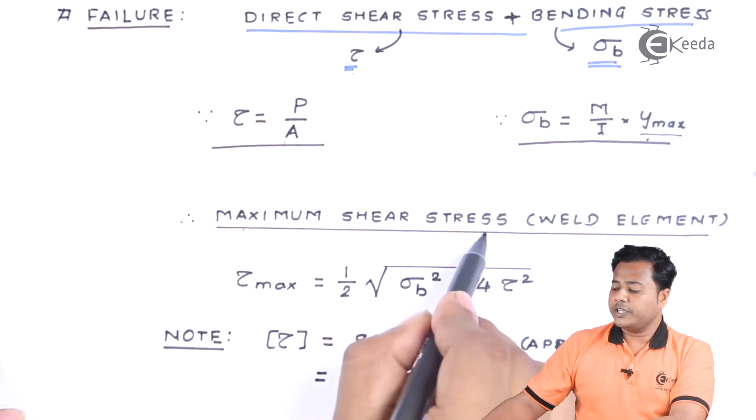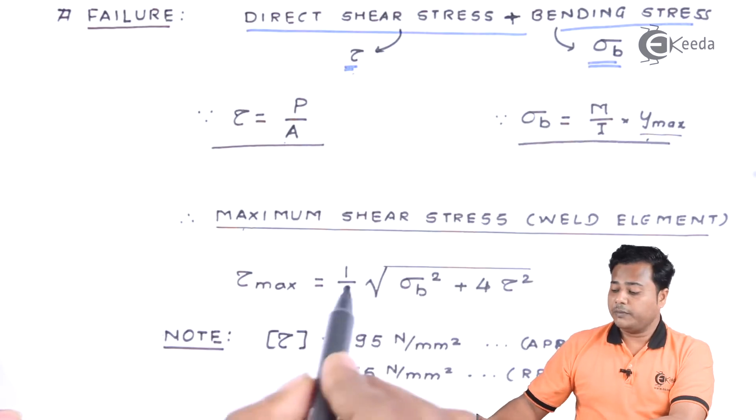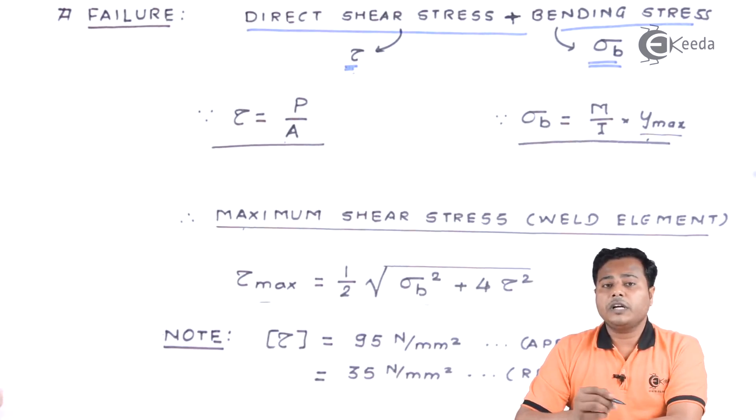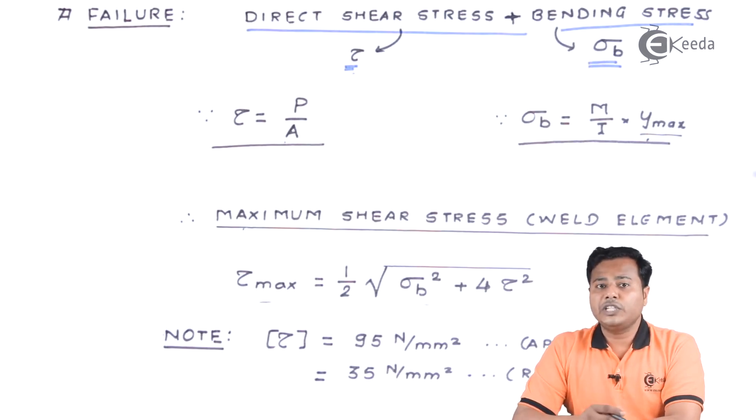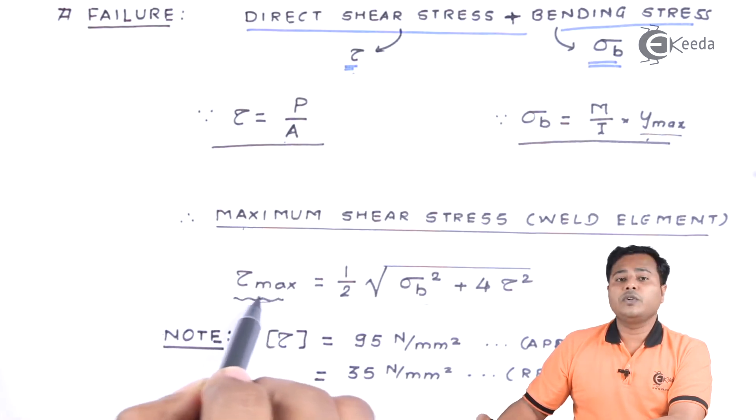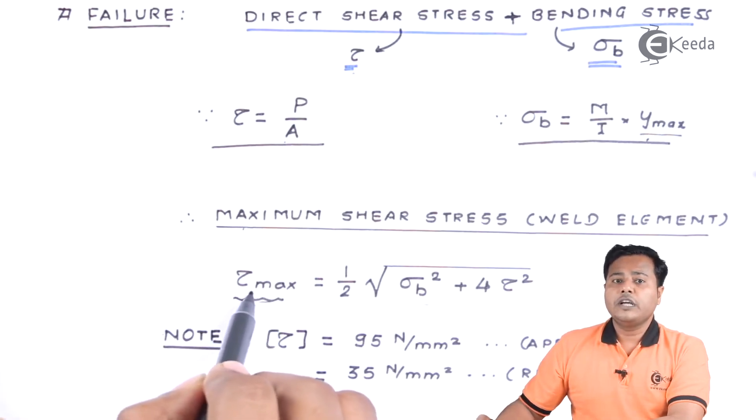Therefore maximum shear stress of weld element will be given by this particular formula. Now we know that this particular formula comes into picture when we consider maximum principle stress theory for the failure. And since shear stress is the prominent one we are going to consider the maximum shear stress concept.